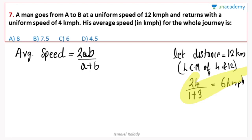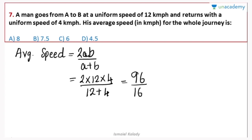We can also substitute into the direct equation: average speed equals 2ab divided by a plus b. Here a is 12 and b is 4. So it's 2 into 12 into 4 divided by 12 plus 4, which is 96 divided by 16, giving us 6 km per hour.